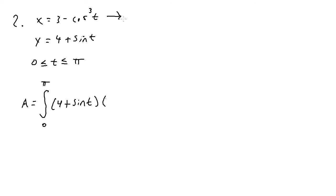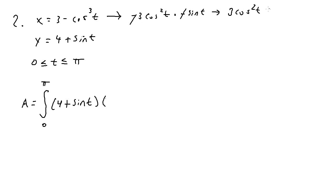If x = 3 - cos³(t), then x' is -3cos²(t) times the derivative of cos(t), which is -sin(t). The two negatives cancel, giving us x'(t) = 3cos²(t)sin(t). We plug that in: x'(t) is 3cos²(t)sin(t).